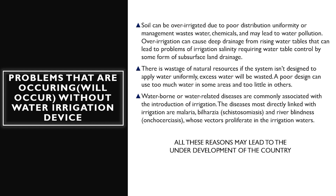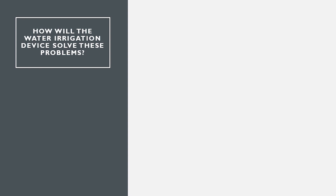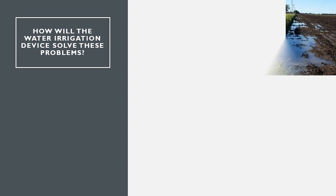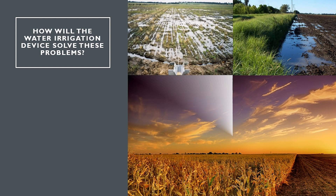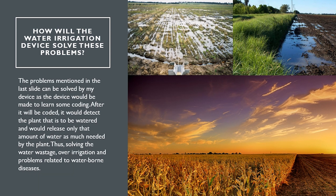All these reasons may lead to the underdevelopment of the country. The problems mentioned can be solved by my device, as the device would be programmed using coding. After it is coded, it would detect the plant that is to be watered and release only as much water as is needed by the plant, thus solving water wastage, over-irrigation, and problems related to waterborne diseases.